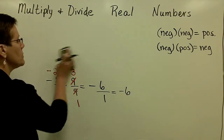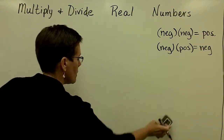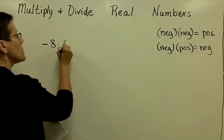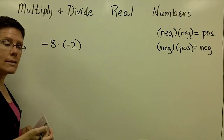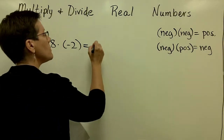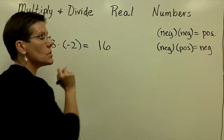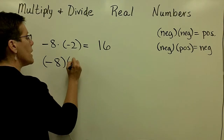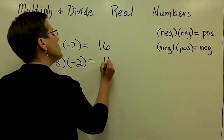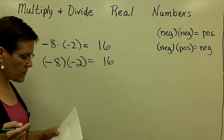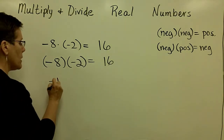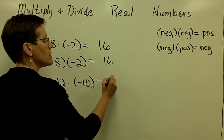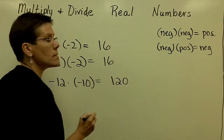Let's look at a few problems that involve a negative times a negative. Negative 8 times negative 2 — you might see it written like that. A negative times a negative is just a positive value, and 8 times 2 is 16. You might see this very same problem written differently. Negative 8 times negative 2 is positive 16, so just look for various ways for that to be written. Negative 12 times negative 10: again, a negative times a negative is a positive, and 12 times 10 is 120.